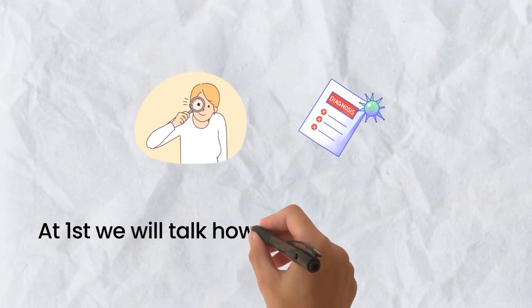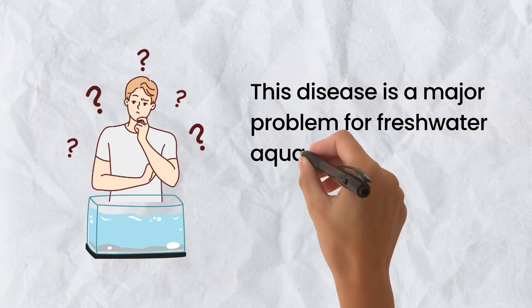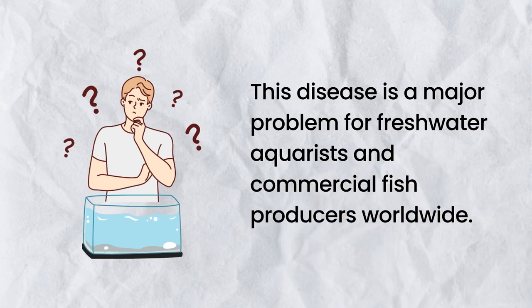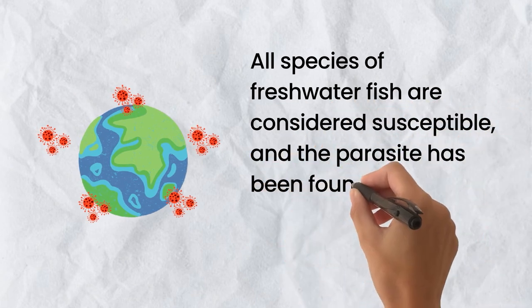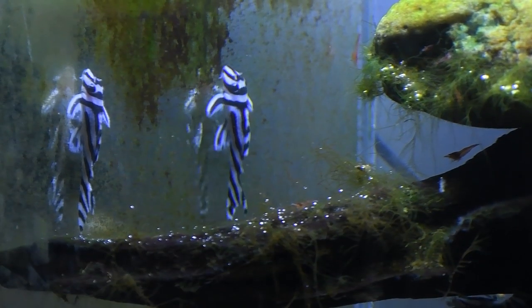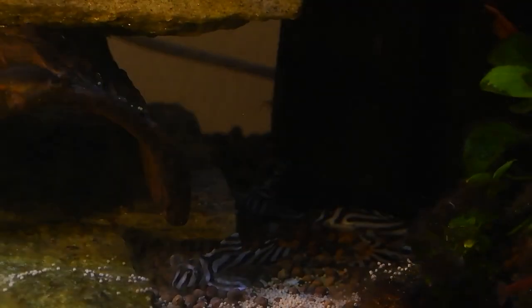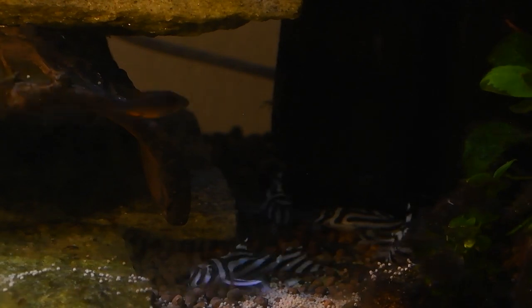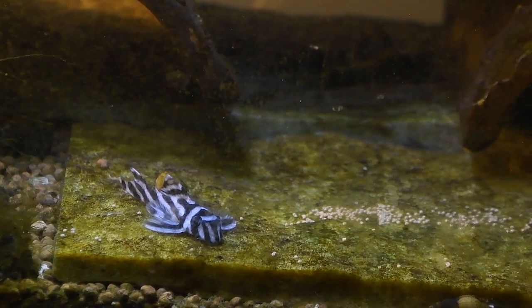We will talk about how to identify and make a correct diagnosis. This disease is a major problem for freshwater aquarists and commercial fish producers worldwide. All species of freshwater fish are considered susceptible, and the parasite has been found in all areas of the world in both cultured and wild fish. These parasites do require a microscope to confirm them as the cause of the characteristic white spots seen on the skin and fins. I will mention other diseases with white spots — their size, appearance, and affected body parts that lead to a probable diagnosis.